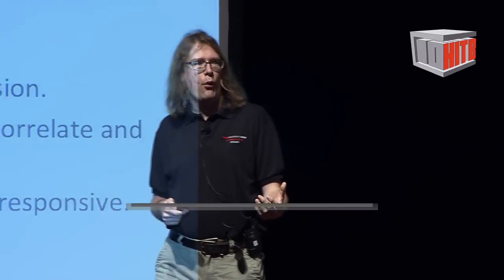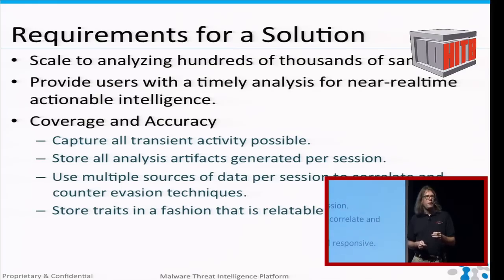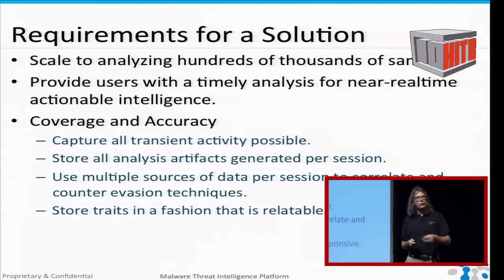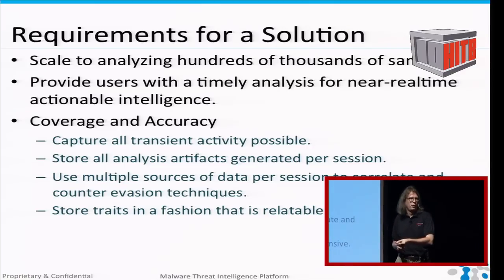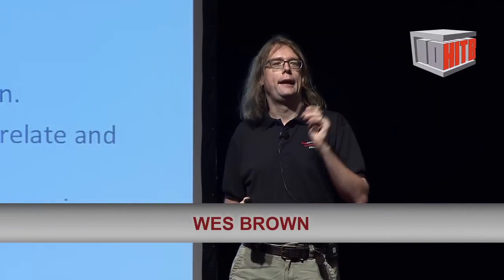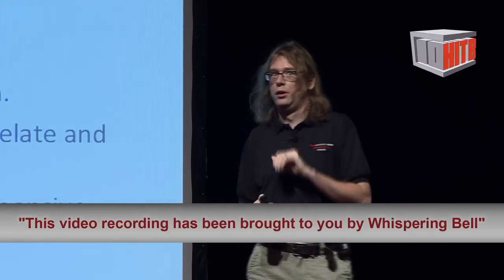We use multiple choices of data to correlate accounting evasion techniques. For example, if a sample has a kernel monitor evasion or kernel debugger evasion technique, we would not normally be able to see it open a file or write to disk. But because we use multiple data sources and also analyze the raw disk image, even if the kernel debugger is evaded, we are still able to see the activity. In every area where we collect data, we collect it from multiple sources in a belt-and-suspenders approach, which also increases our accuracy.